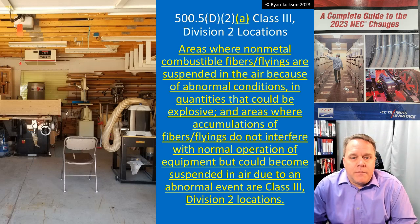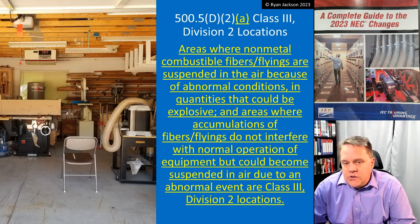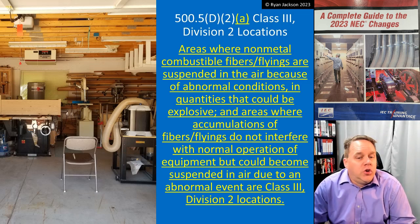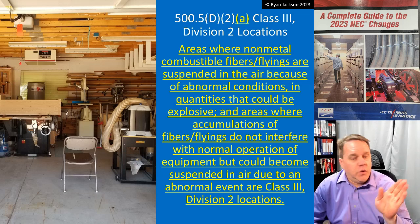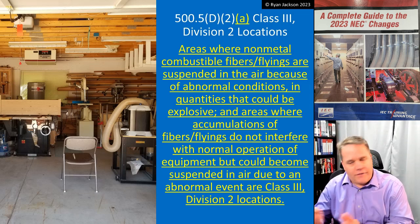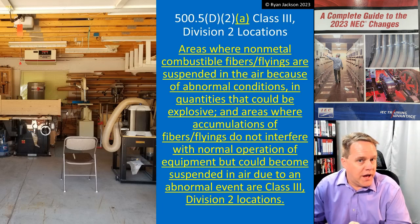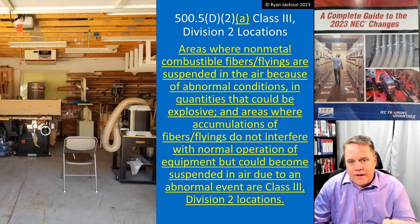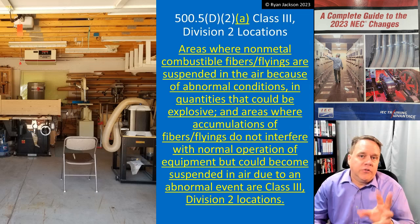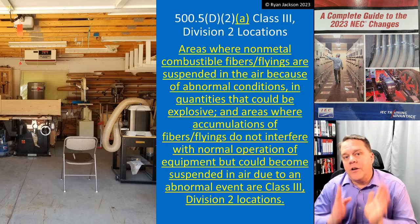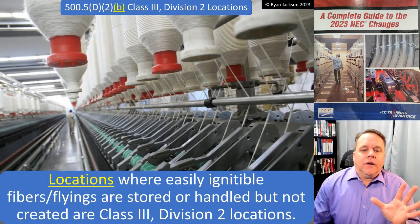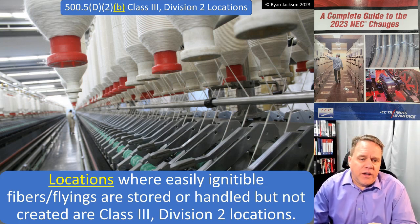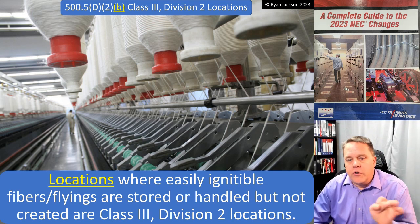Class 3 Division 2 locations are areas where non-metal combustible fibers or flyings are suspended in the air due to abnormal conditions in quantities that could be explosive, and areas where accumulations of fibers and flyings don't interfere with normal equipment operation but could be suspended in the air due to an abnormal event. For ignitable fibers and flyings, Class 3 Division 2 locations are where they are stored or handled but not created.